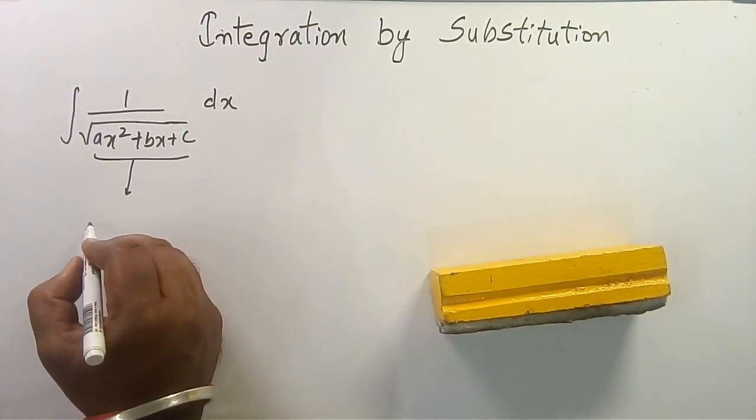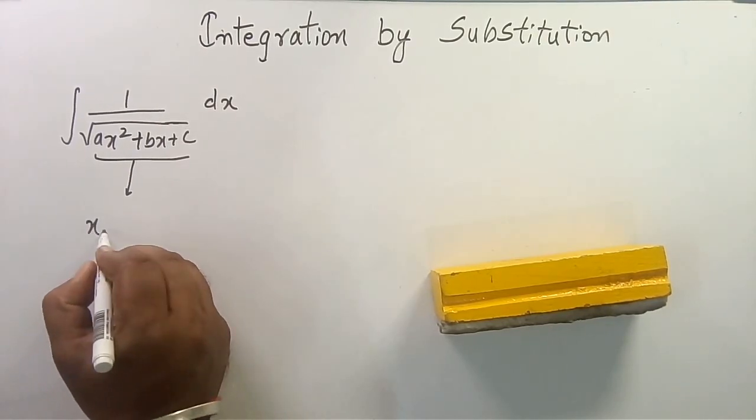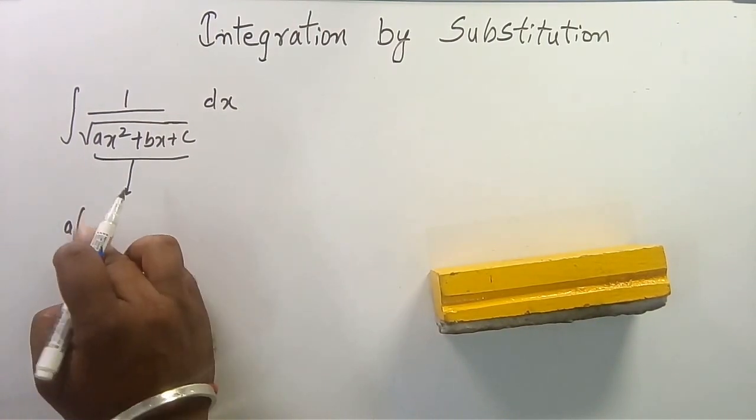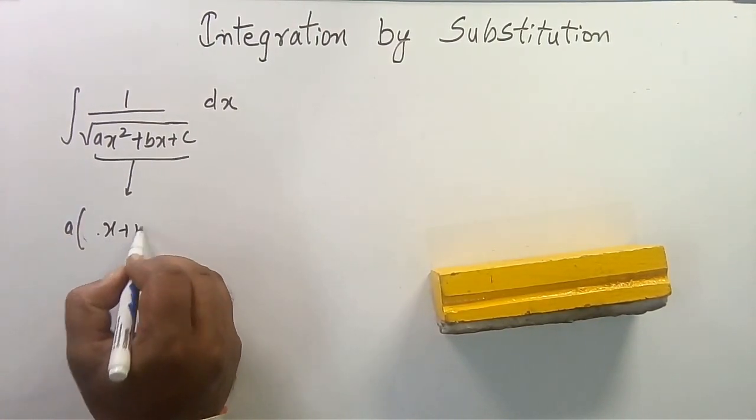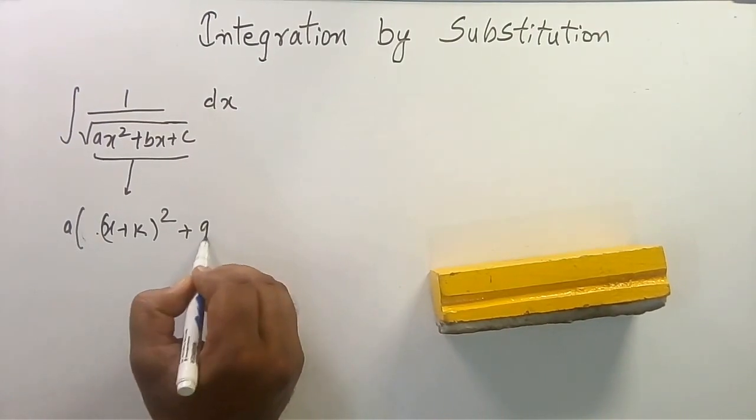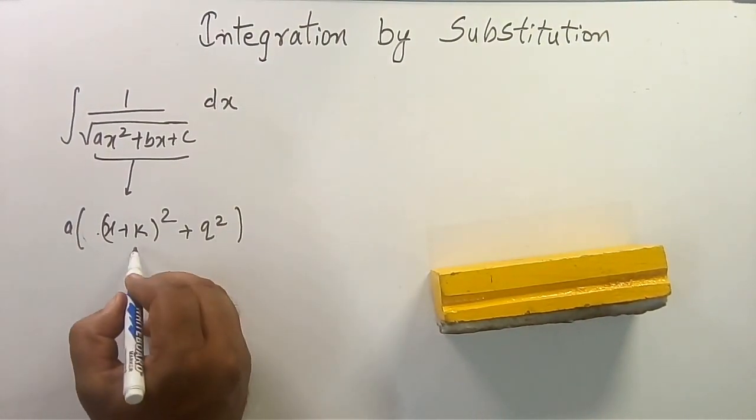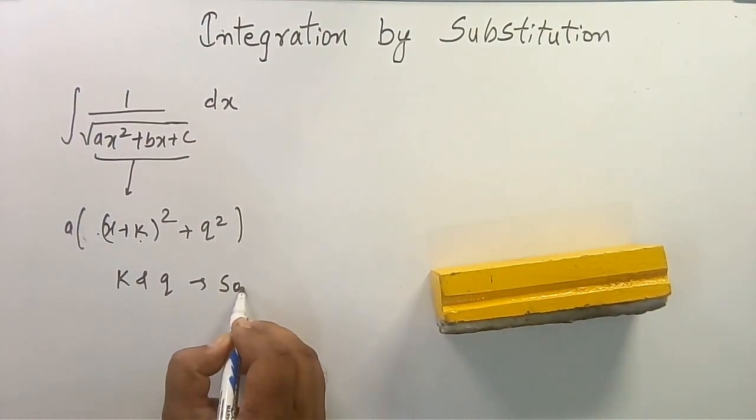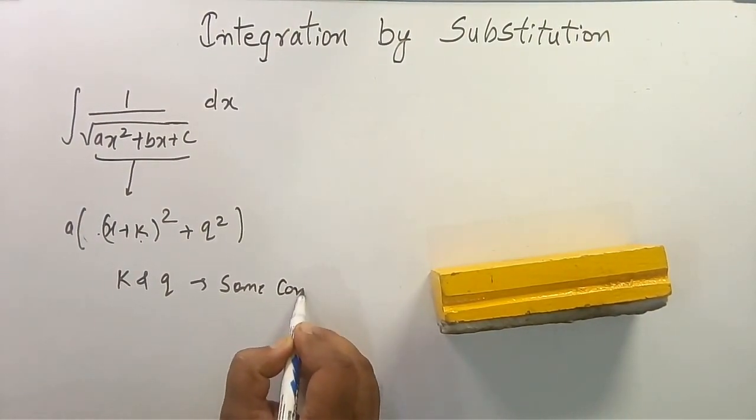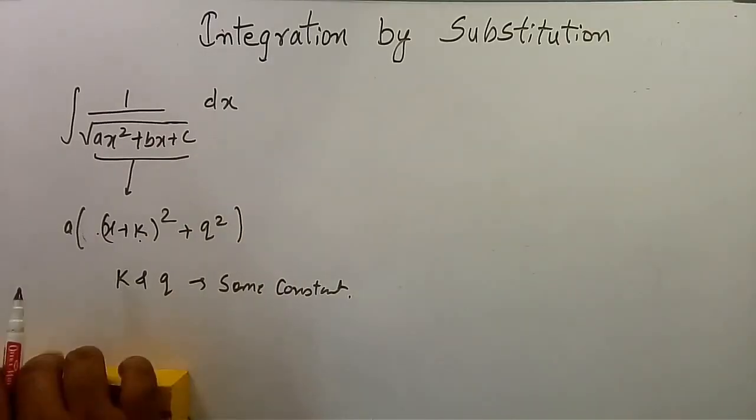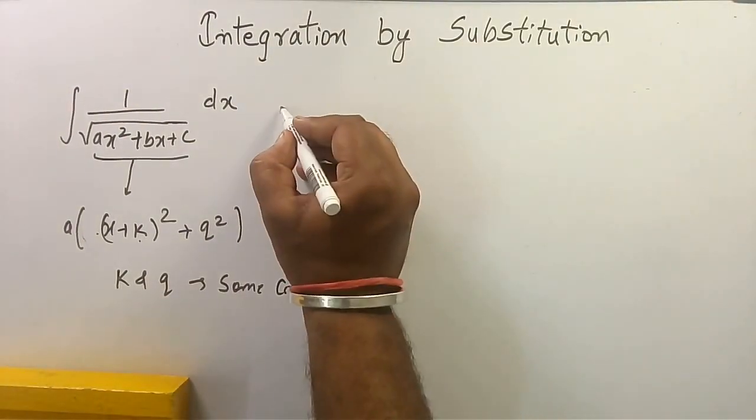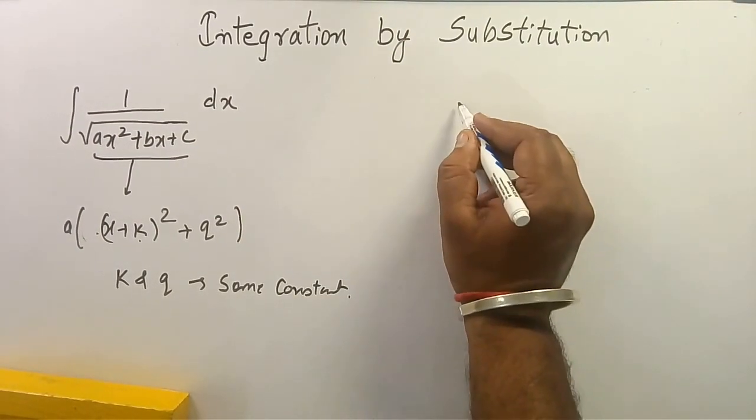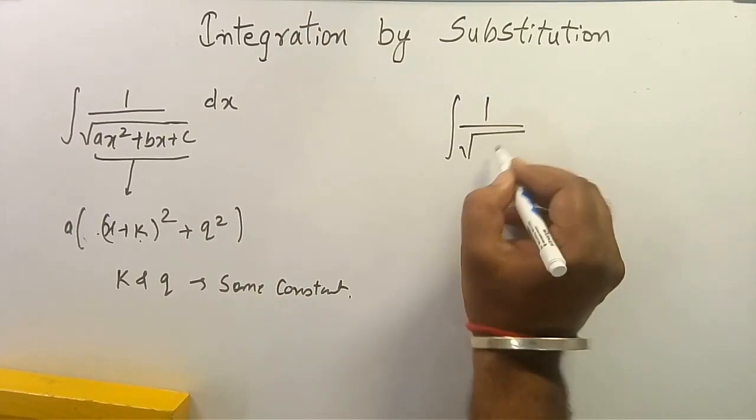We rewrite it as a times (x + k)² plus k² where k are some constants. After writing this expression in this form, we can use either of the three formulas.